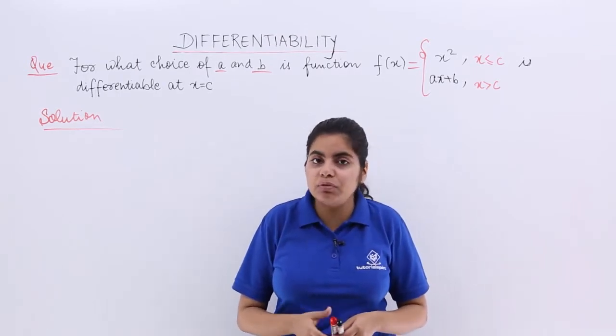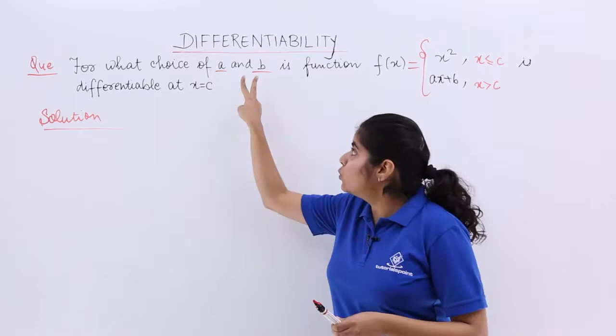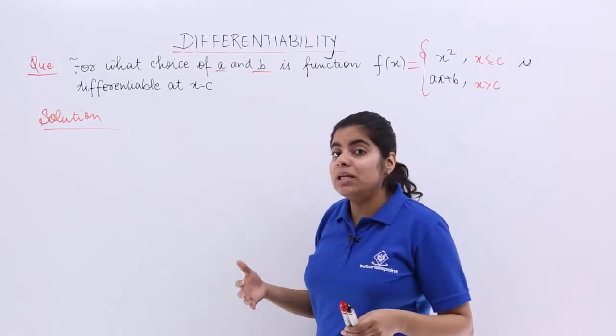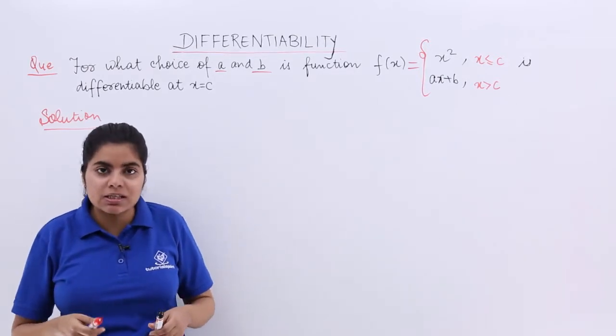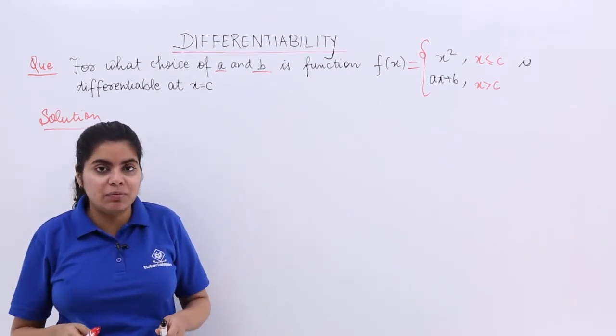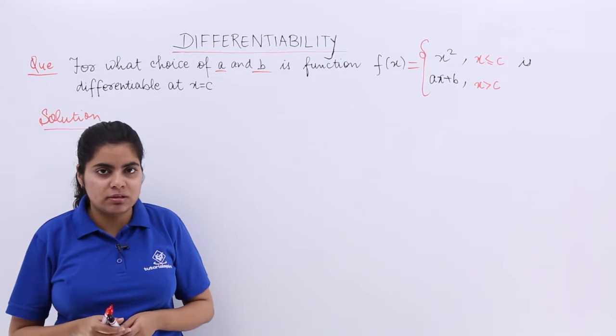And I have to find two values: one of A, one of B. That means I need at least two equations for this. So, let us find out the values of A and B using two equations.